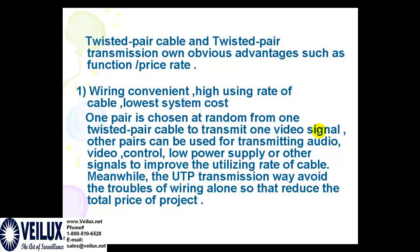Twisted pair transmission has obvious advantages such as function-to-price rate and wiring convenience. One pair is chosen at random from one twisted pair cable to transmit one video signal. Other pairs can be used to transmit audio, video, control, low power supply, or other signals, improving the utilization rate of cables. Meanwhile, UTP transmission may avoid the troubles of wiring alone, thereby reducing the total price of the project.